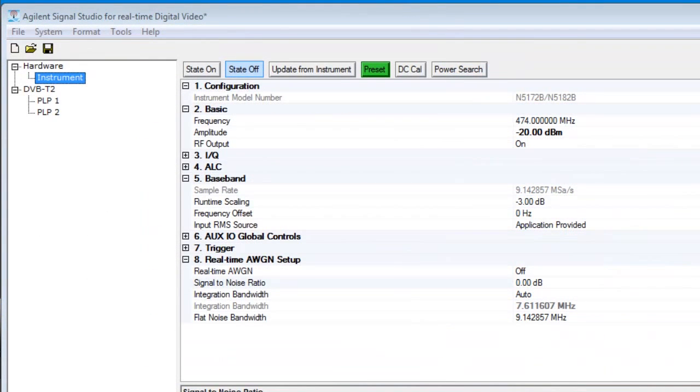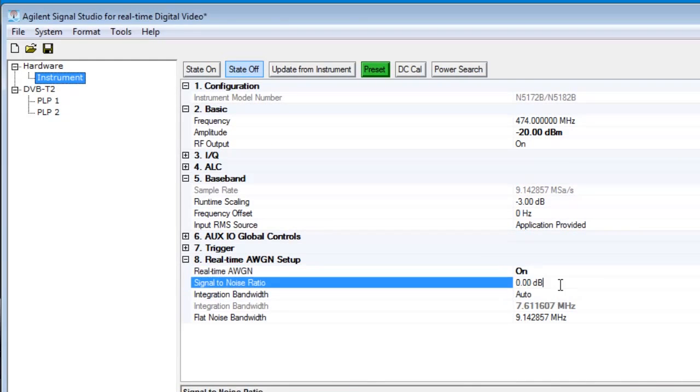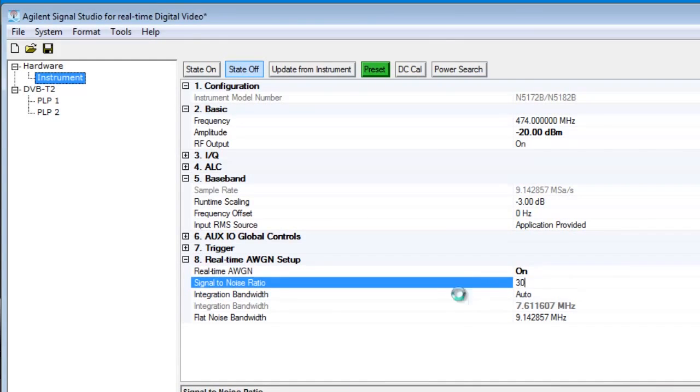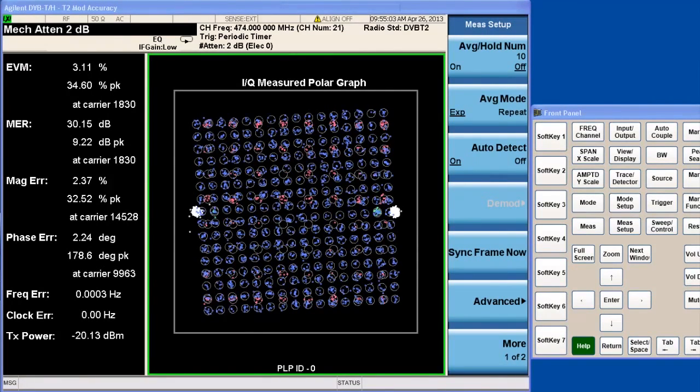We can add AWGN to the signal. And we set the carrier-to-noise ratio at 30 dB. We can see that the MER now is about 30 dB.